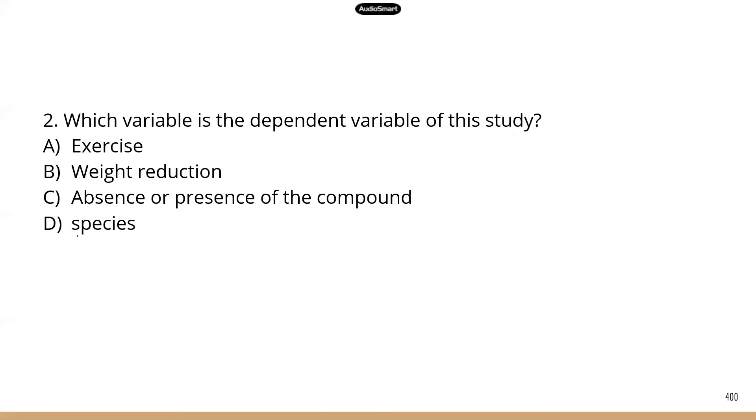Number two, which variable is the dependent variable? Dependent variable is what you measure. In this case, the independent variable is the compound, or more specifically the absence or presence of the compound, whether the human subjects ingest or do not ingest this compound. That's the independent variable. The dependent variable is what you measure in terms of results. So that will be weight loss. All right, so B is the correct answer.